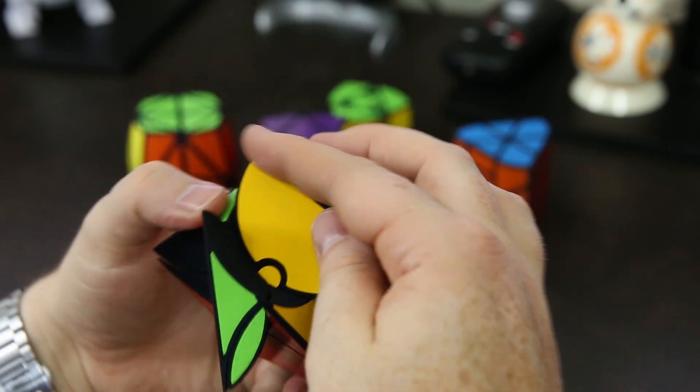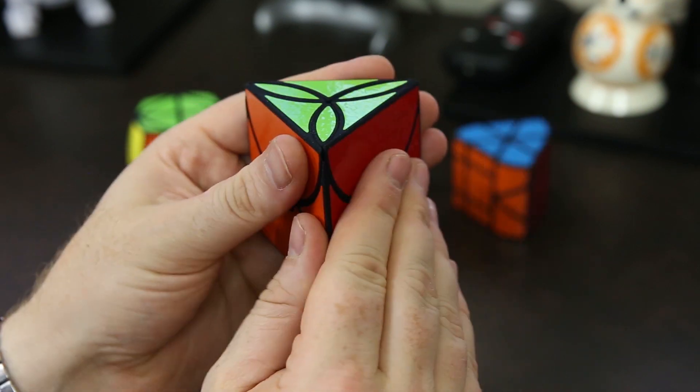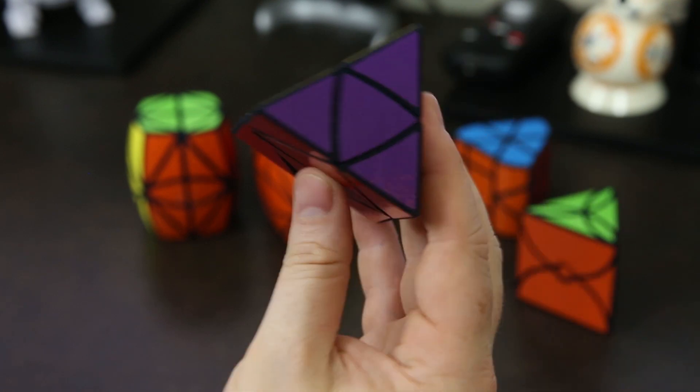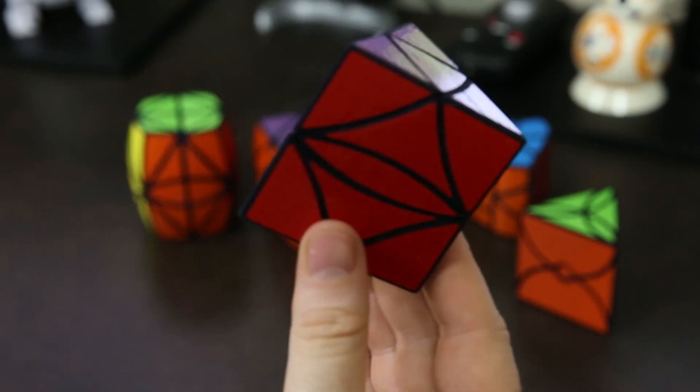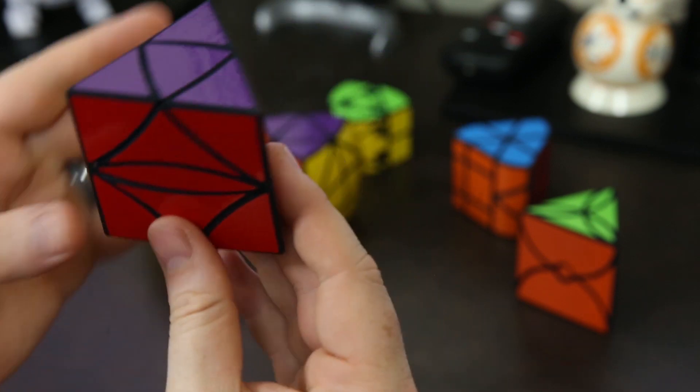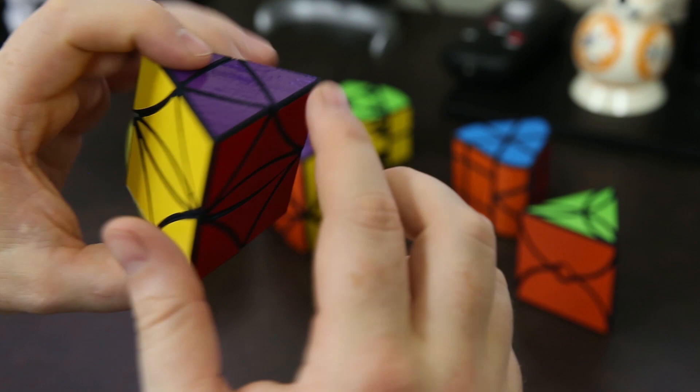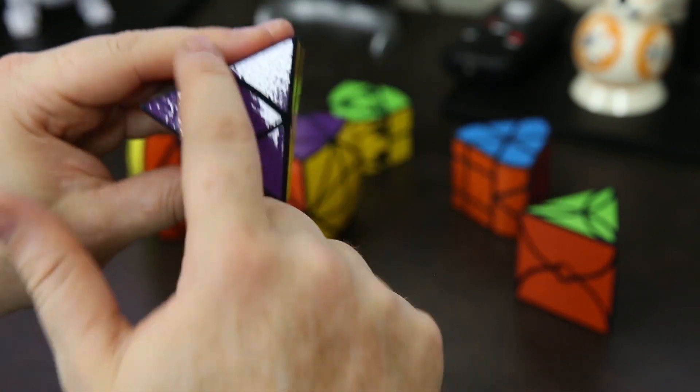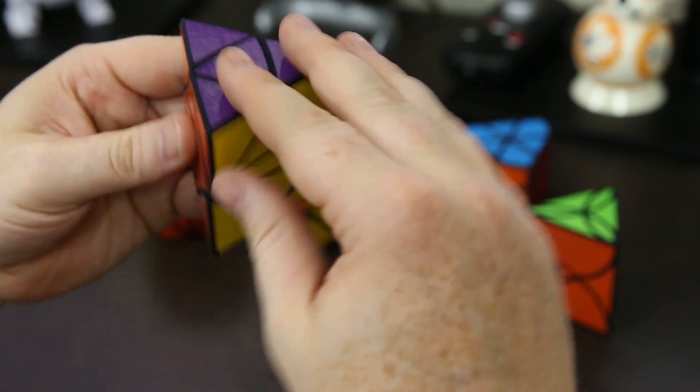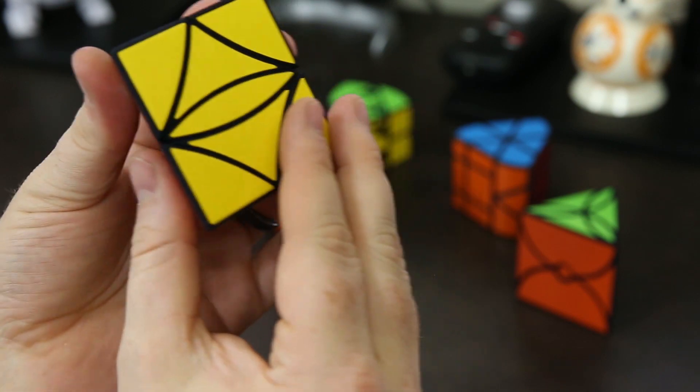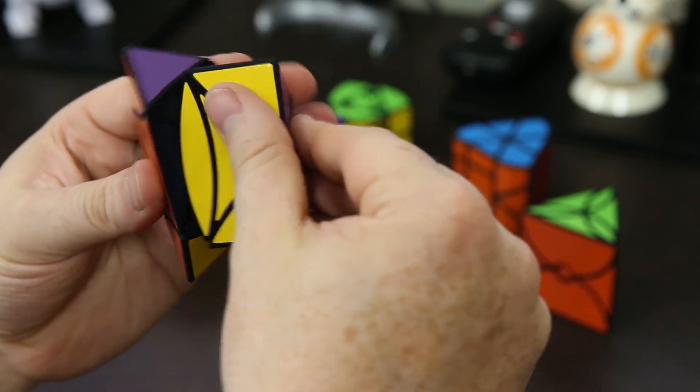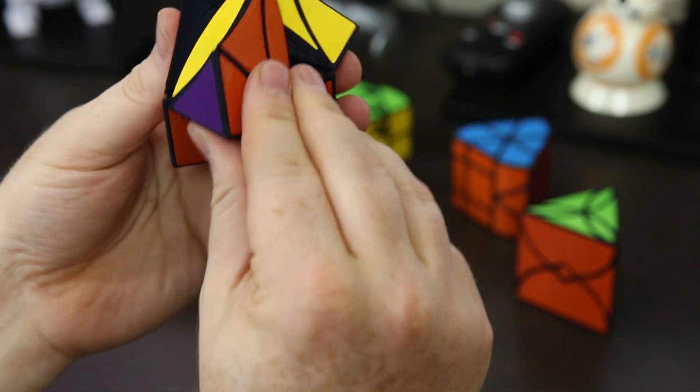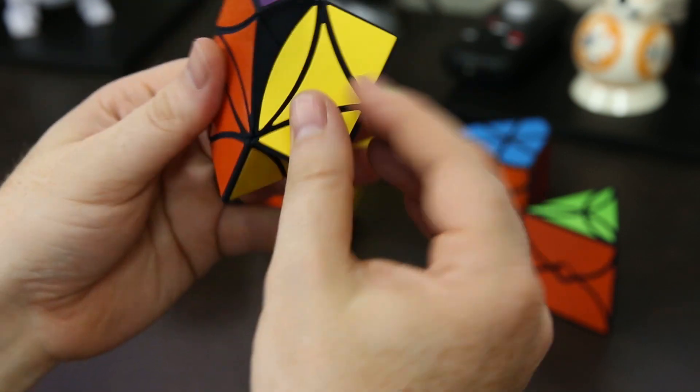This is also a triangular prism, and it's the tri-copter 6 curvy. It has the six edges of the top and bottom face—one, two, three, four, five, six—they can all twist like that. It too is a shape shifting and jumbling puzzle and it looks really confusing. I think I'm gonna have a lot of trouble with these puzzles for sure.